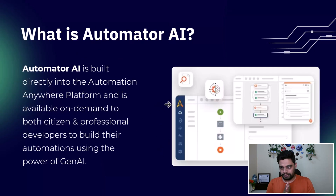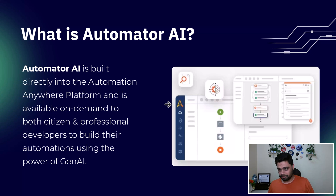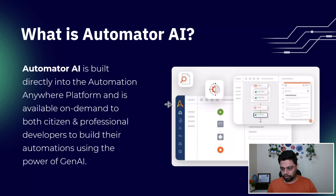What is Automator AI? Automator AI is a generative AI feature — a collection of intelligent on-demand automation features that are embedded within the Automation Anywhere platform. It is a built-in feature directly into the platform and is available on demand to both citizen and professional developers to build their automations using the power of generative AI.